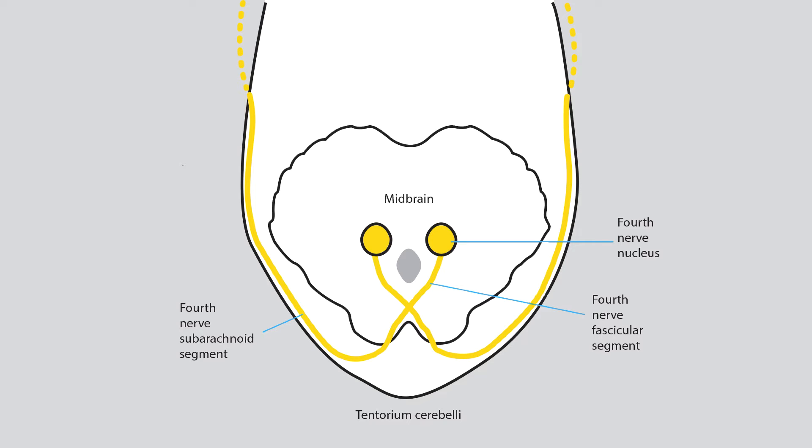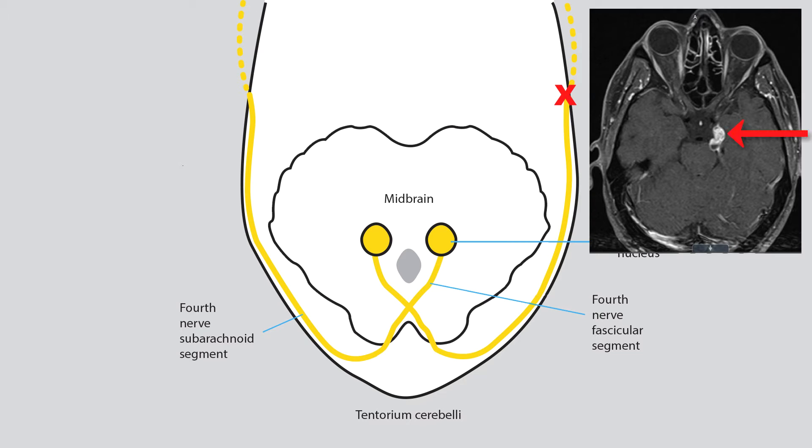As the subarachnoid segment of the fourth nerve travels forward and pierces the inner edge of the tentorium cerebelli, it may become inflamed. It may also be crippled by a tentorial meningioma or by neurosurgeons operating on structures in this neighborhood. If the neurosurgeon merely nudges the nerve, it recovers. If it is transected, the damage is permanent.